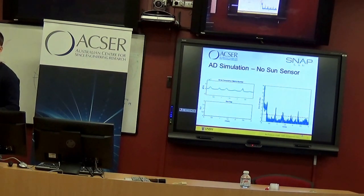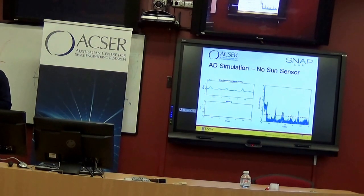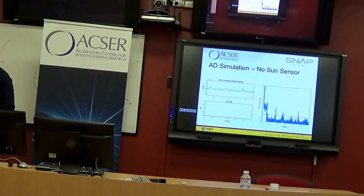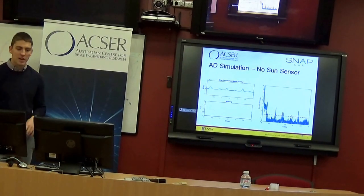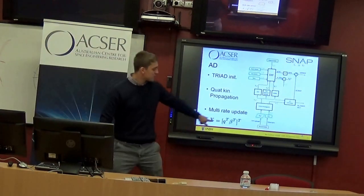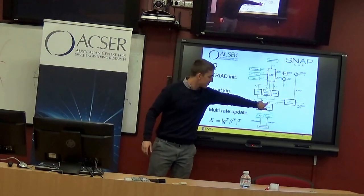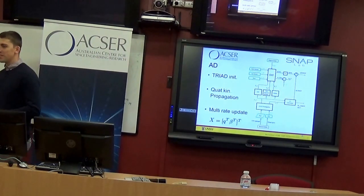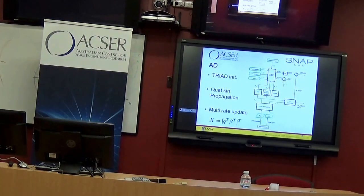Q: Does GPS help? A: GPS can provide a more accurate position and velocity solution, which can plug back into the system instead of the orbital propagator. But GPS is a payload — we don't want to rely on the payload for our core ADCS function.